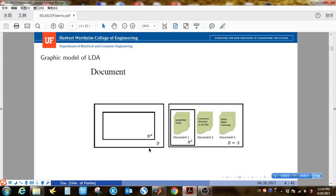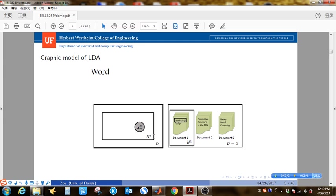In the document level, each document contains some words. I use N superscript D to represent the number of words in document D. In word level, each word is an observable to the model. So the grey circle means this is observable.